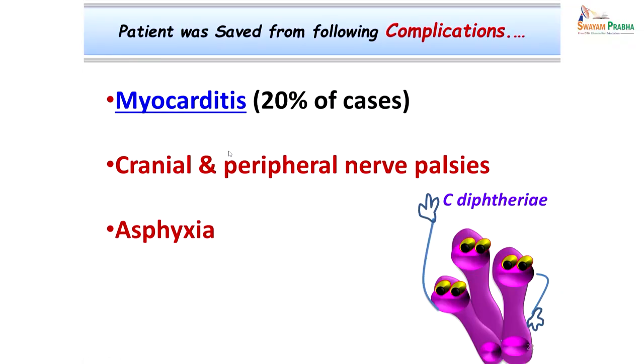The girl was saved from complications that are common in about 20 percent of cases — especially myocarditis, which occurs because of a very potent toxin released by this organism that is cardiogenic in nature; and also a neurotoxin, which could have produced cranial and peripheral nerve palsies. The child was also saved from asphyxia, which is one of the causes of death in such cases.